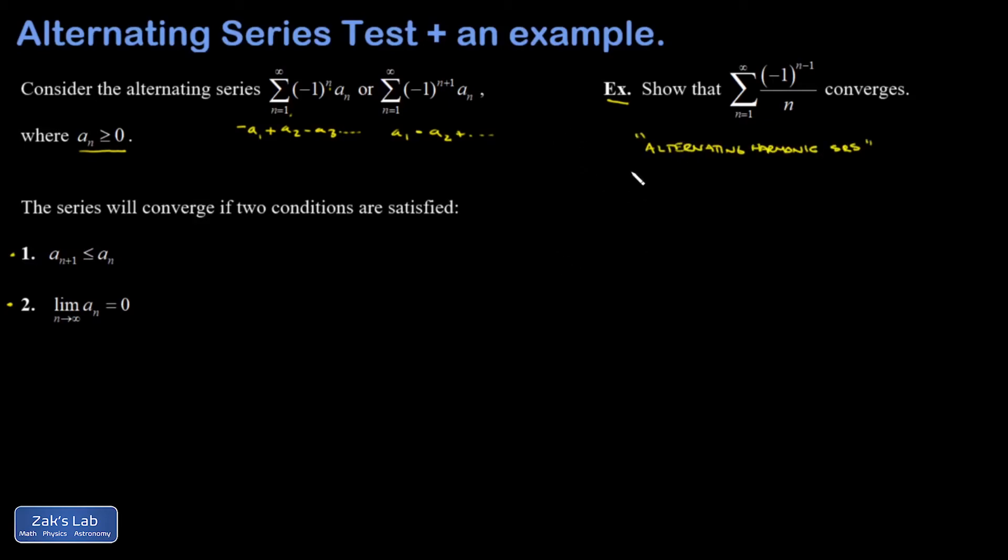So let's start testing these conditions. I want to show that the next term is less than the previous term. So my goal is to show that a(n+1) is less than or possibly equal to an. And a(n+1) is just 1 over n plus 1.